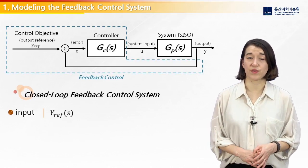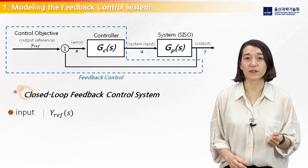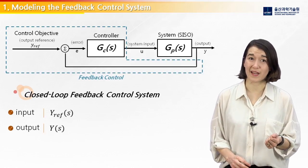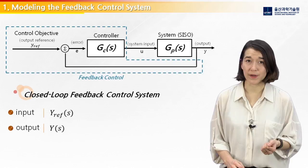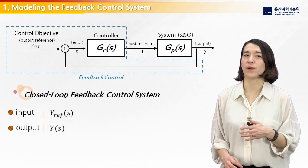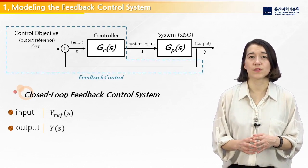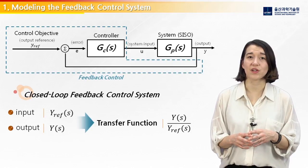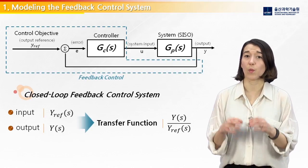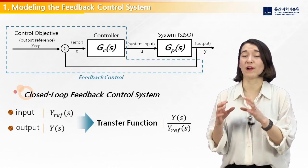For the closed-loop feedback control system, the input is the reference voltage, Yref, and the output is the same as the plant output, Y. So for the closed-loop transfer function, we need to find the equation for Y over Yref.